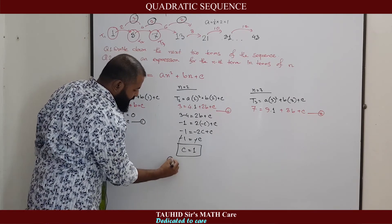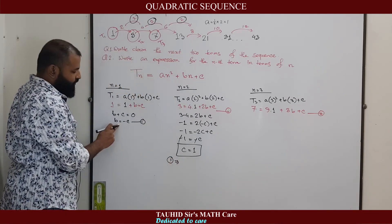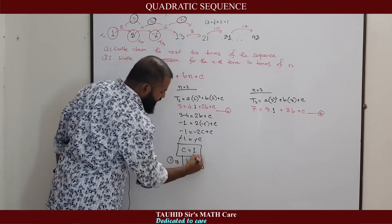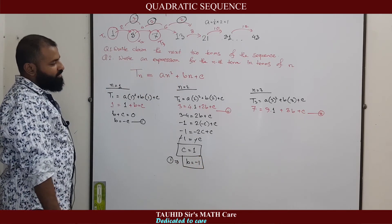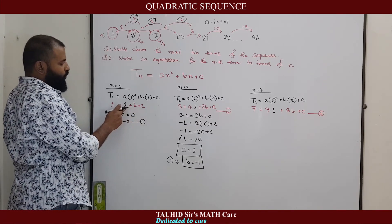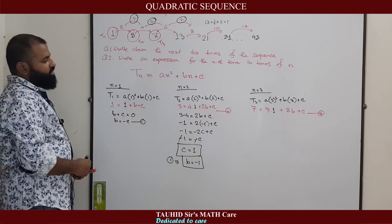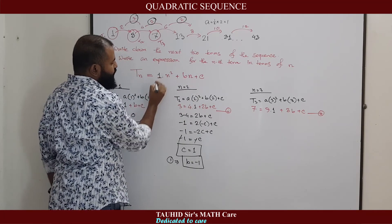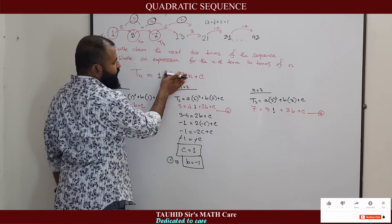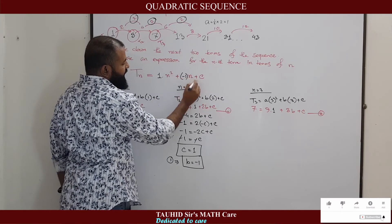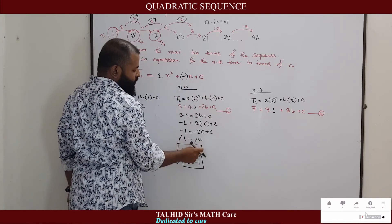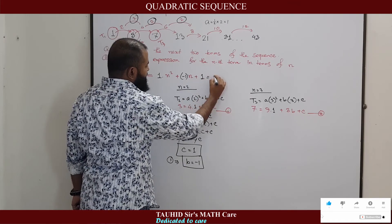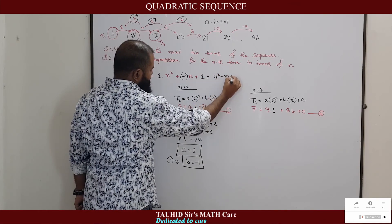Therefore, what about B? We got the expression from equation 1, B equal to minus C. That means B equal to minus 1. And what about A? We got the A already, A equals to 1. So, the expression of the nth term is An². That means 1 into n² plus Bn, B equal to minus 1, plus C, C equal to 1. So, the expression becomes n² minus n plus 1.